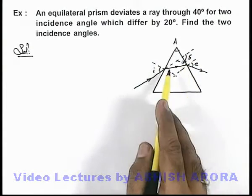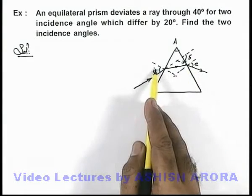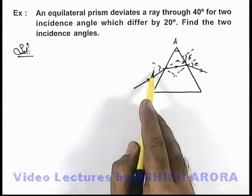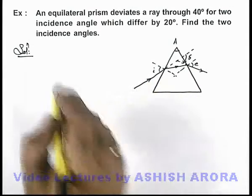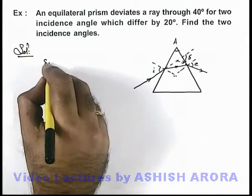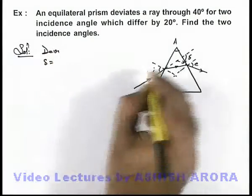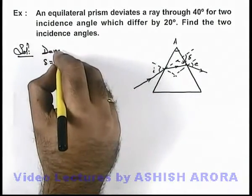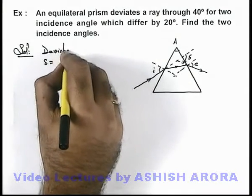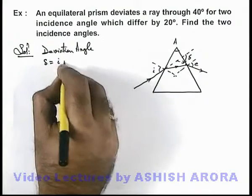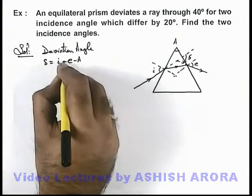According to reversibility of light, when i becomes e, the value of e becomes i which was initially there. So in this situation, the deviation angle we can directly write: in case of a light passing through two matte surfaces of a prism, deviation angle can be directly given as i plus e minus A, this we already studied.